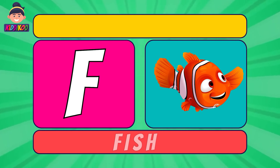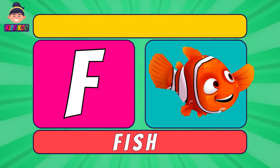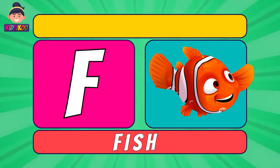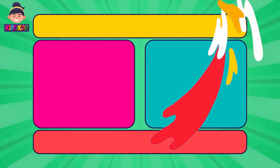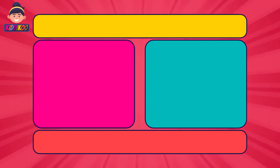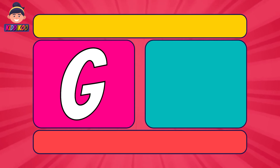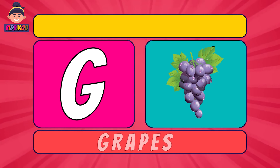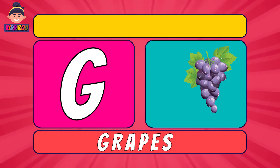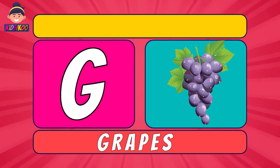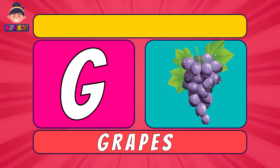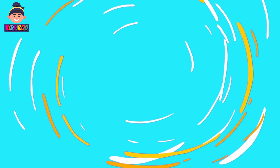Next letter is F. F for Fish. Fish. Next letter is G. G for Grapes. Grapes.